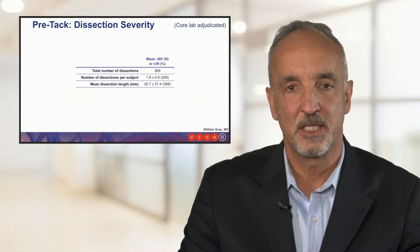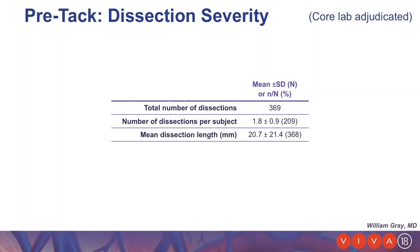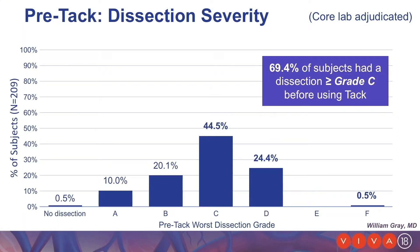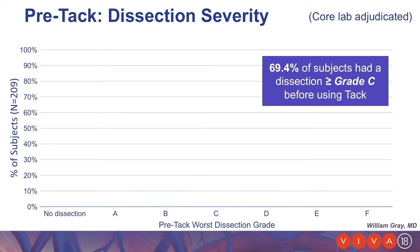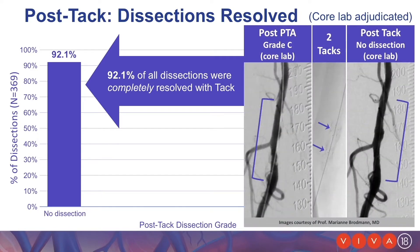Looking at dissection severity pre-TAC: the total number of dissections in this population was 369, with a mean of 1.8 dissections per subject, and a mean dissection length of 20 mm. When we look at the distribution of dissection grades across this 100% dissected population, we see that a significant majority — nearly three-quarters of patients — had a dissection of grade C or greater. Post-TAC implantation, over 92% of all dissections of any grade were completely resolved, as adjudicated by the core lab. A representative angiogram shows a C-grade dissection treated with two TACs.